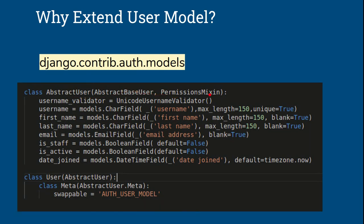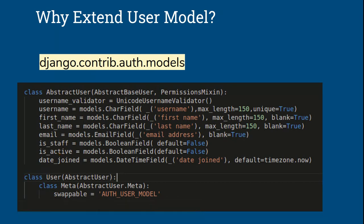The abstract user model includes abstract user, permission mixins, and fields like username, first name, last name, email, is_active. As a beginner level, this field is sufficient. But suppose we need to keep profile information about the user's designation, address, or phone number — this type of extra information.